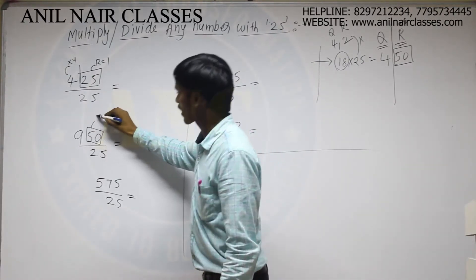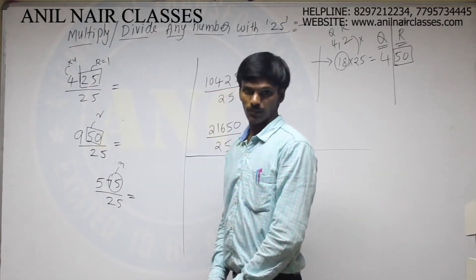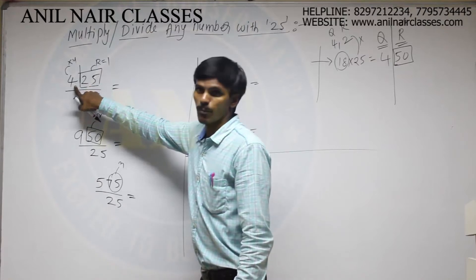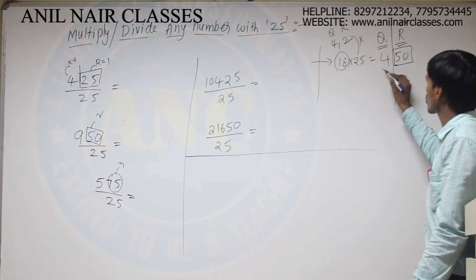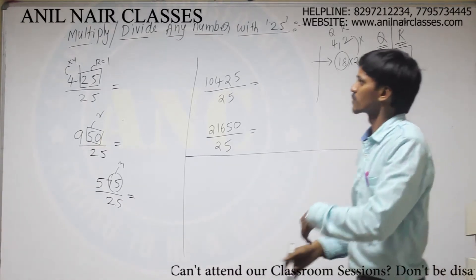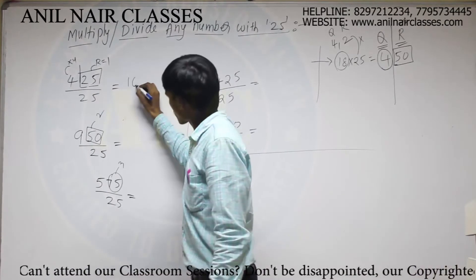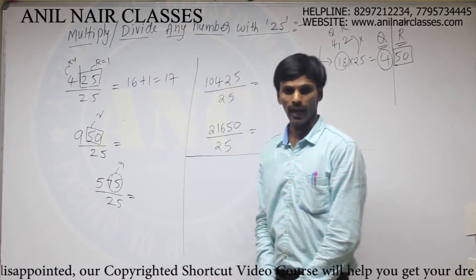Similarly if it is 50 remainder will be 2. If it is 75 remainder will be 3. Now multiply this number with 4 because previously in the multiplication we divided this number then only we got the coefficient. So to get the original number multiply it now. So 4 times 4 is 16, remainder is 1. So 17 will be the direct answer.